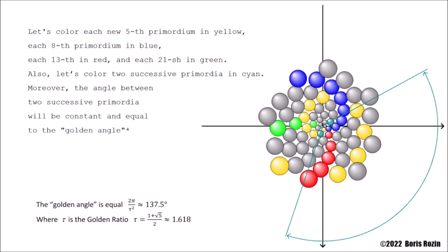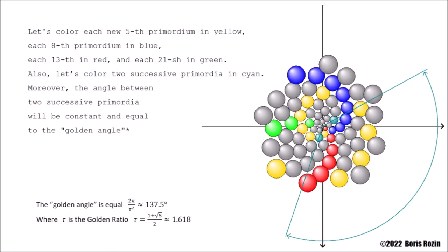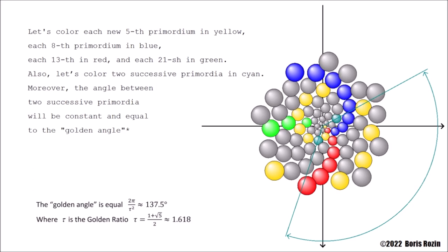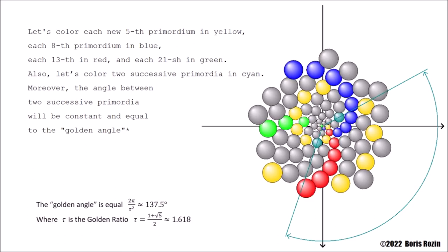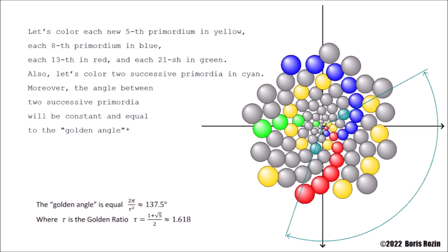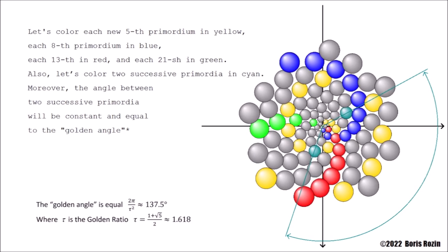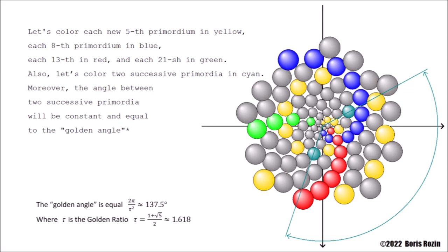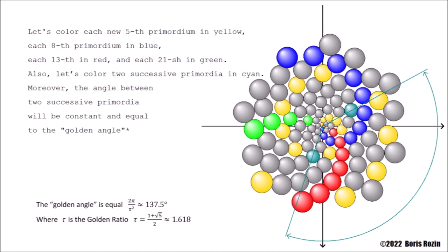Let's color each new fifth primordium in yellow, each eighth primordium in blue, each thirteenth in red, and each twenty-first in green. Also, let's color two successive primordia in cyan. Moreover, the angle between two successive primordia will be constant and equal to the golden angle.